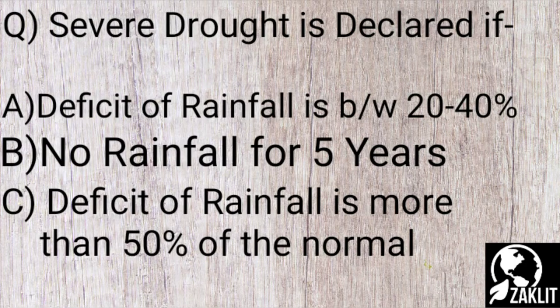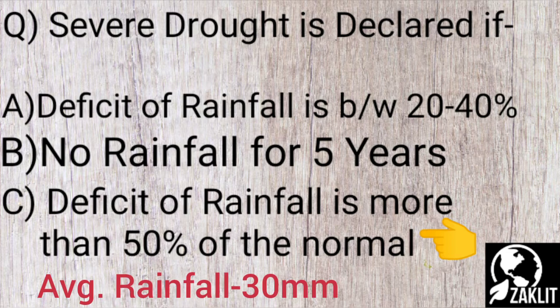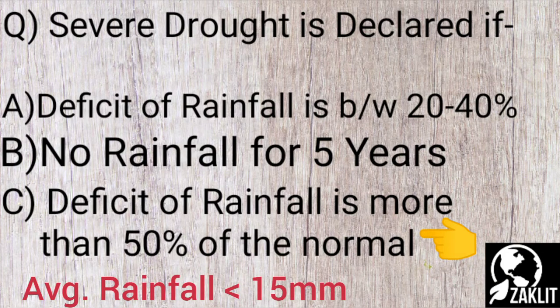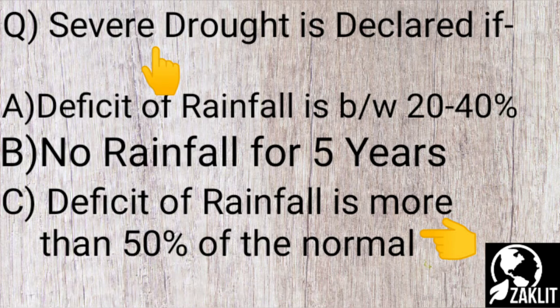The first question is: severe drought is declared if — and the correct option is option number three: a deficit of rainfall of more than 50% of the normal rainfall. For example, if a place has an average rainfall of 30 mm per year, and in some year the rainfall is less than 15 mm — that is, half of the average — then that year is called a severe drought year for that place.